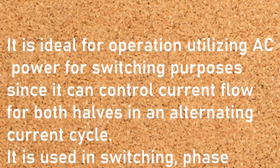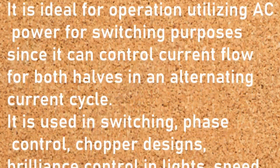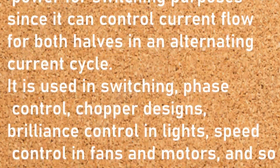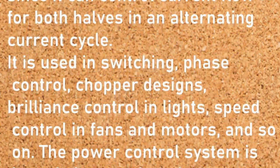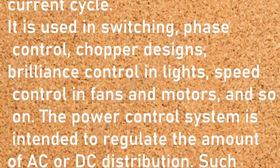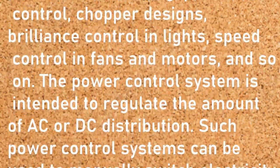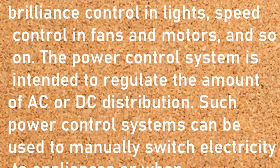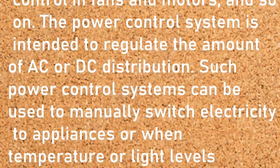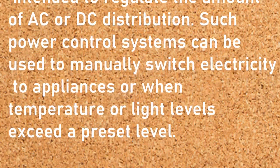It is used in switching, phase control, chopper designs, brilliance control in lights, speed control in fans and motors, and so on. The power control system is intended to regulate the amount of AC or DC distribution. Such power control systems can be used to manually switch electricity to appliances, or when temperature or light levels exceed a preset level.